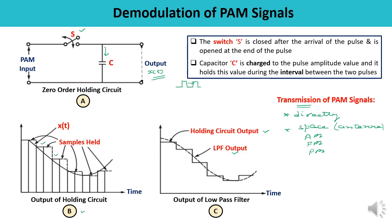So the overall system will be known as PAM-AM, PAM-FM, or PAM-PM, because the PAM signal is further amplitude modulated, frequency modulated, or phase modulated. At the receiving end, the same processes must be performed — AM, FM, or PM detection must be done to get back the PAM signal, and then from the PAM signal we recover the original message signal.